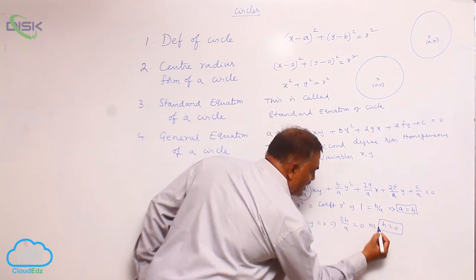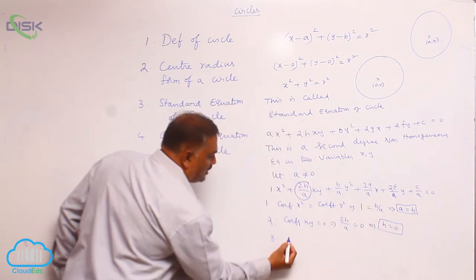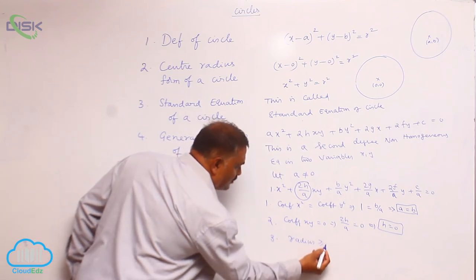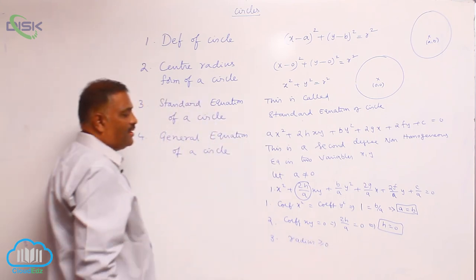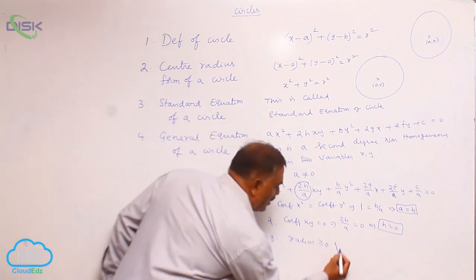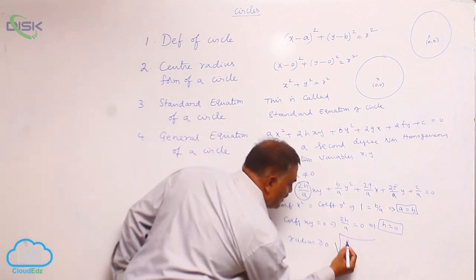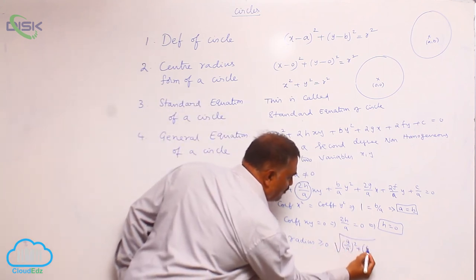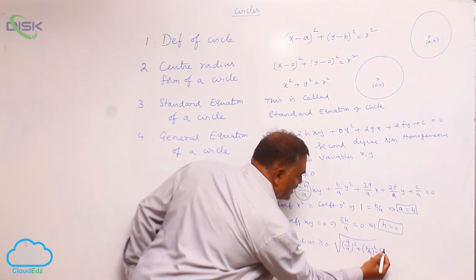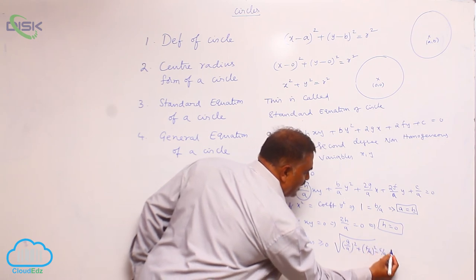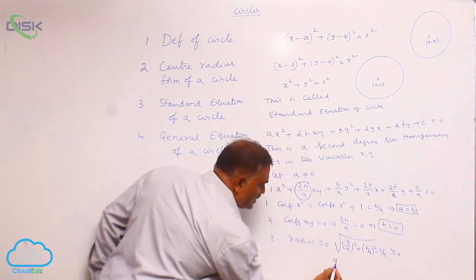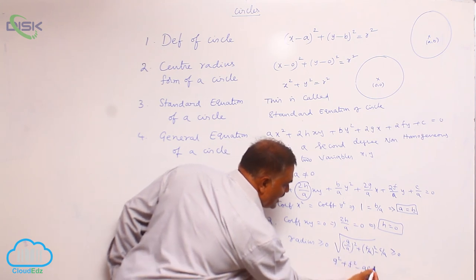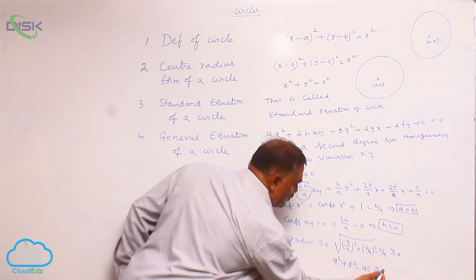Condition three: radius must be greater than or equal to 0. That is, the square root of (g/a) squared plus (f/a) squared minus c/a, must be greater than or equal to 0. Simplifying, g square plus f square minus ac must be greater than or equal to 0.